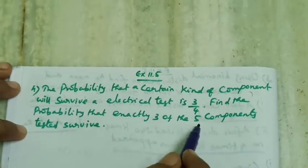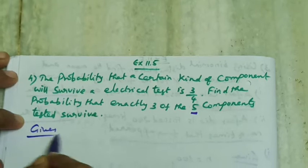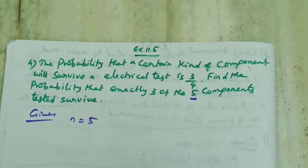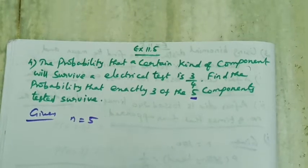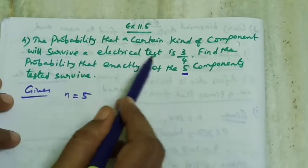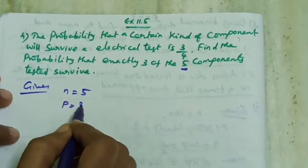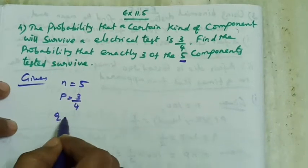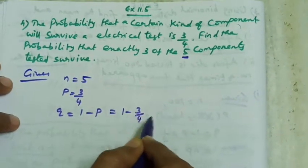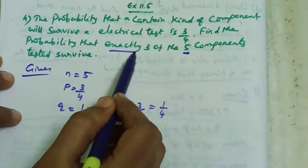In this case, out of 5 components, n is equal to 5. An electrical test is done on these components. The probability that the component will survive the electrical test is P equal to 3/4. Q is equal to 1 minus P, that is 1 minus 3/4, which is 1/4.